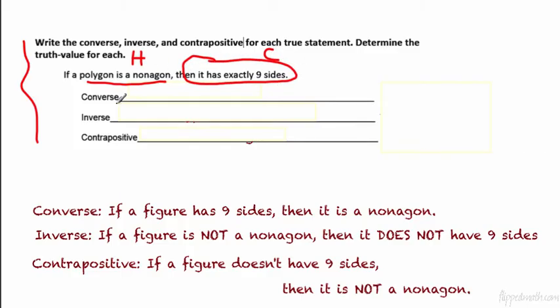And the then part is called the conclusion. The converse is when you switch the two. So if it has exactly nine sides, then it's a nonagon. The inverse is when you make them both the opposite. So if a polygon is not a nonagon, then it does not have nine sides. The contrapositive: if a figure doesn't have nine sides, you switch it and you negate it, then it's not a nonagon.